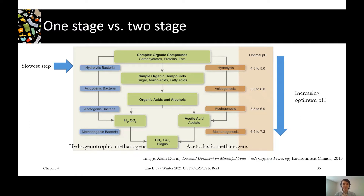That step is called hydrolysis. Interestingly, hydrolysis is most efficient at an acidic pH. It's also the slowest step in the process.